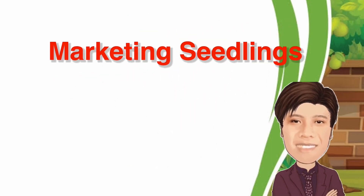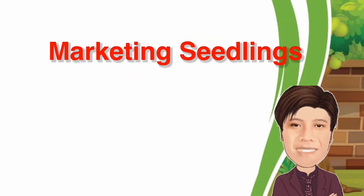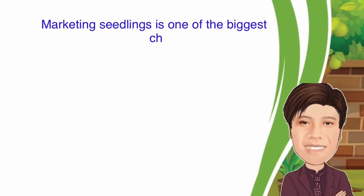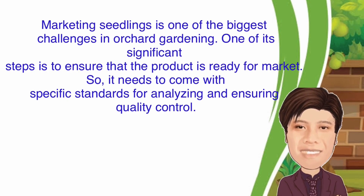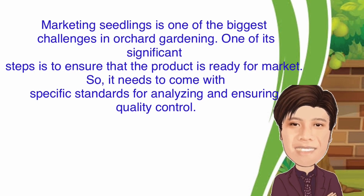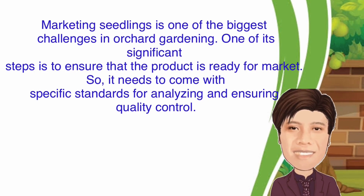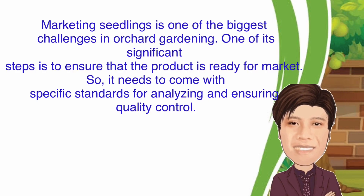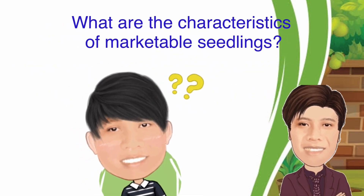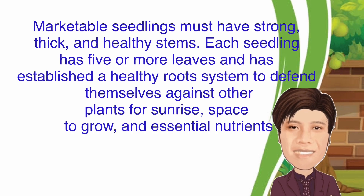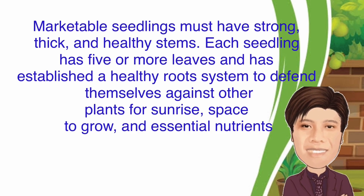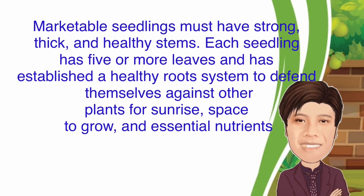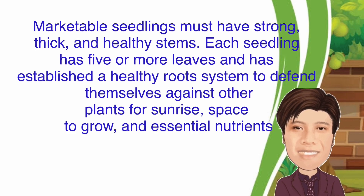Now that we know the different fruit and fruit-bearing trees grown in the Philippines, it is time to learn how to market the seedlings. Marketing seedlings is one of the biggest challenges in orchard gardening. One of its significant steps is to ensure that the product is ready for market. It needs to come with a specific standard for analyzing and ensuring quality control. Marketable seedlings must have a strong, thick, and healthy stem. Each seedling should have five or more leaves and establish a healthy root system to defend themselves against other plants for sunlight, space to grow, and essential nutrients.